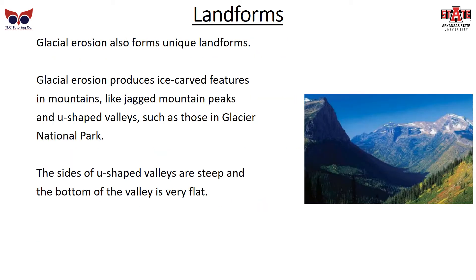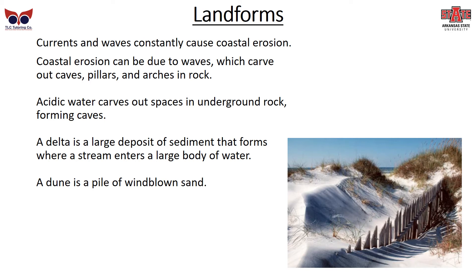Glacial erosion produces ice-carved features in mountains, like jagged mountain peaks and U-shaped valleys, such as those in Glacier National Park. The sides of U-shaped valleys are steep and the bottom is very flat. Currents and waves constantly cause coastal erosion, carving out caves, pillars, and arches in rock. Acidic water can carve out spaces in underground rock, forming caves. A delta is a large deposit of sediment that forms where a stream enters a large body of water, and a dune is a pile of wind-blown sand.